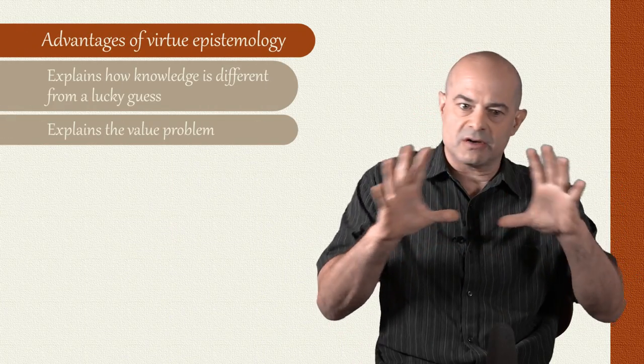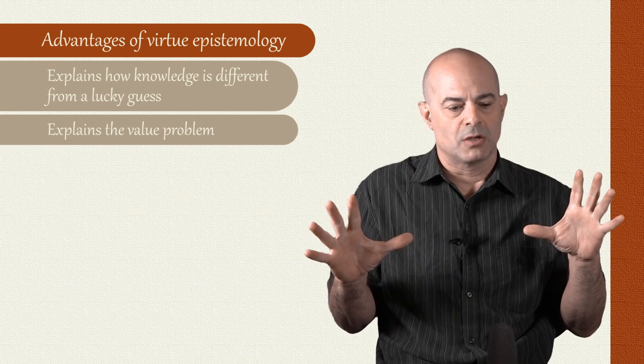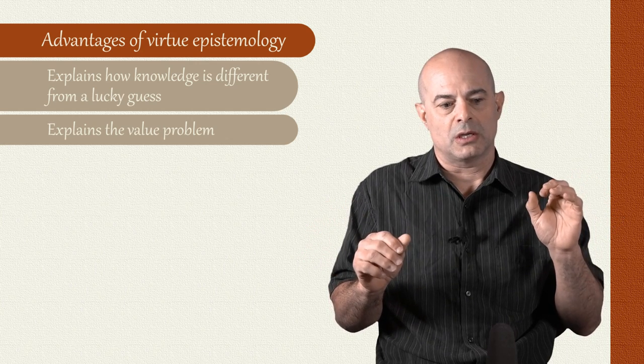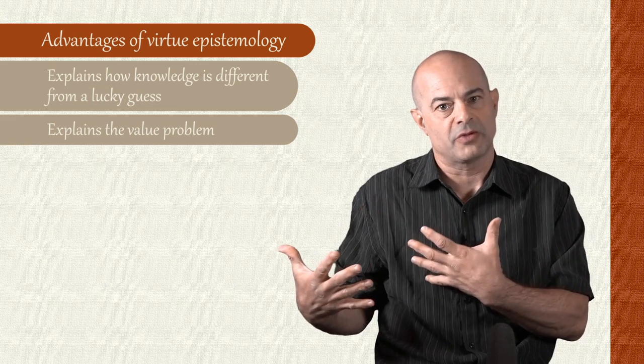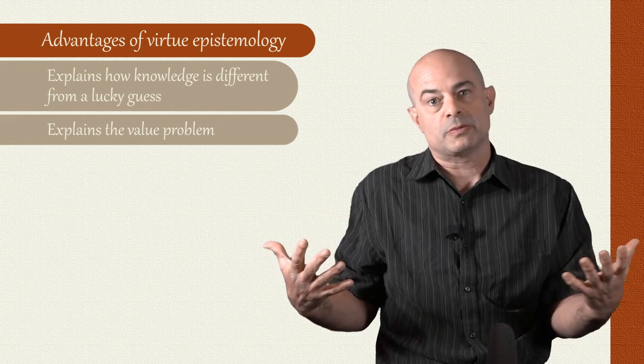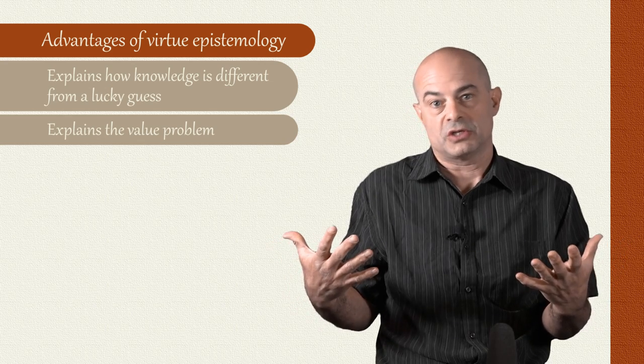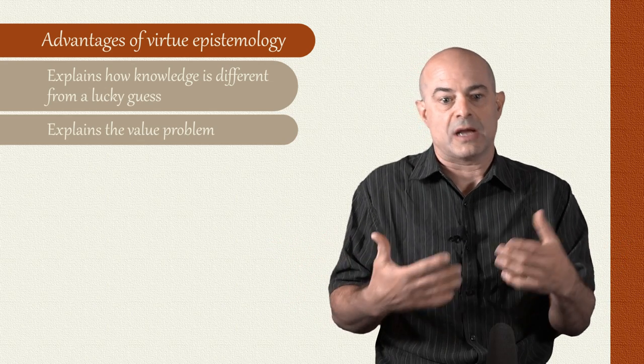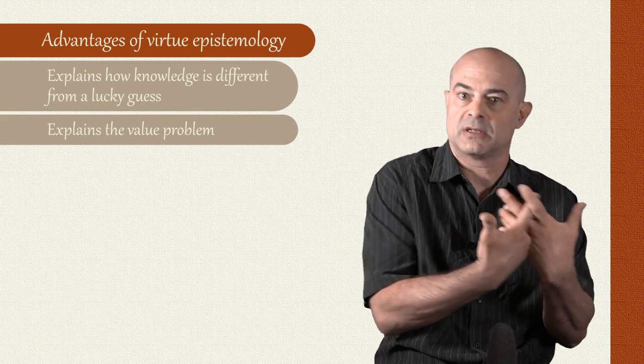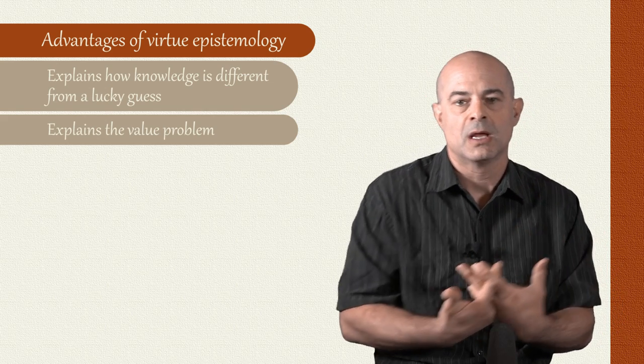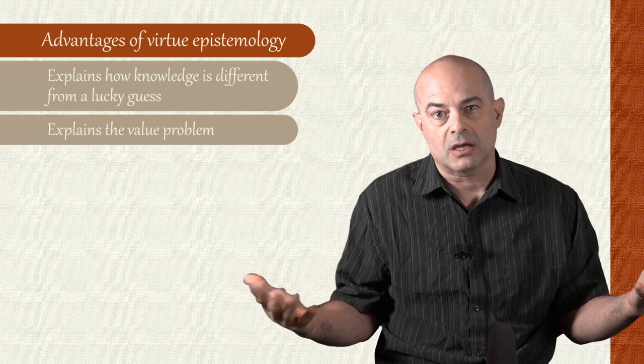So this is this very general approach that human beings take is that we value success due to our own excellent agency over success that we get some other way. We can now explain the value of knowledge just in exactly those terms. Knowledge is a kind of success from intellectual excellence, success from intellectual ability or agency, and that's better than just getting it right by luck.